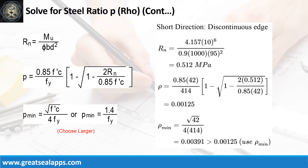Given short direction, discontinuous edge moment equals 4.157 kN·m; resistance factor equals 0.9; B equals 1,000 mm; and D equals 95 mm. The beam design ratio RN equals 0.512 MPa, and reinforcement ratio ρ equals 0.003. Use ρ minimum of 0.00391.